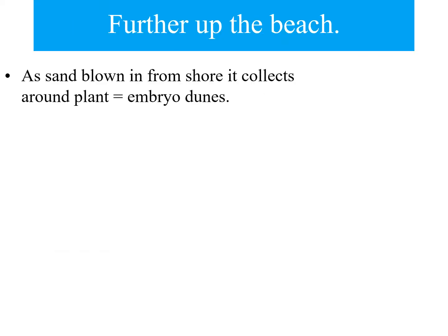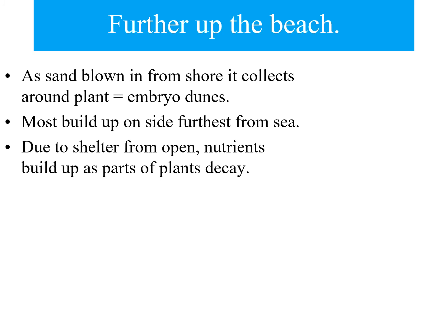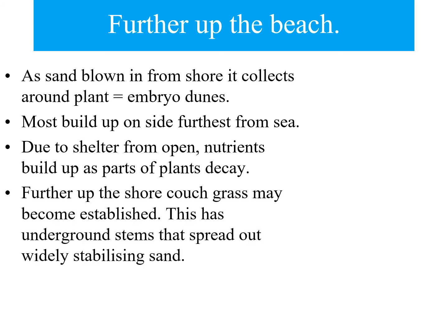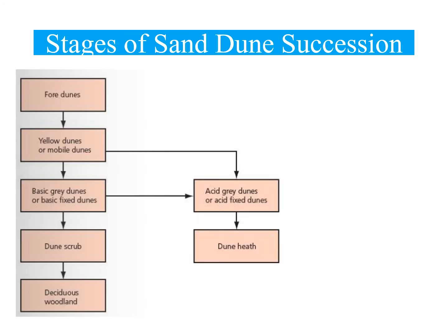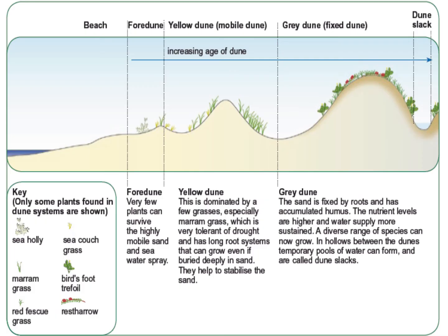As you go up the beach, the dunes progress from embryo dunes to grey dunes. The sand becomes more stable and plants introduce nutrients through their decay over seasons into the soil, making it much more established. You go from foredunes — very few nutrients — to yellow dunes, which are still mobile with very few plants surviving, to grey dunes, then dune scrub, and eventually woodland as stability increases further back.